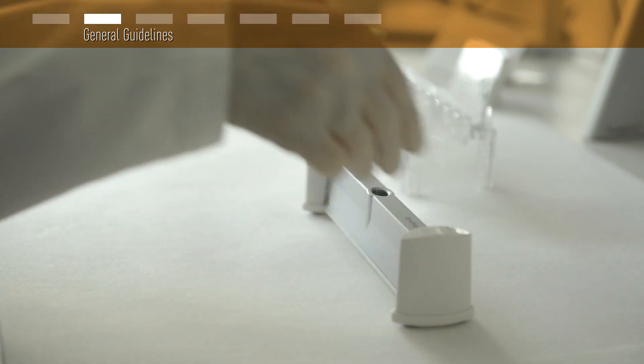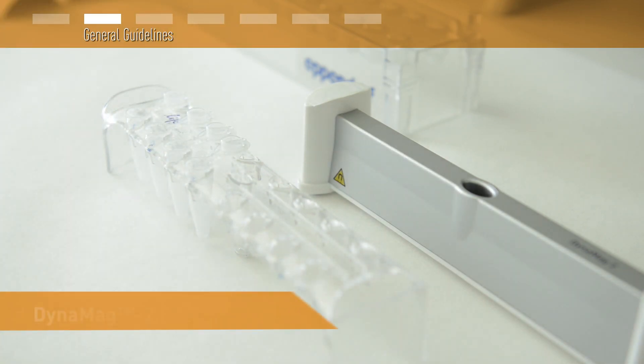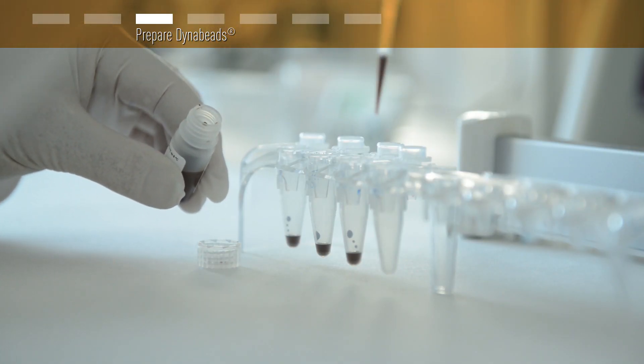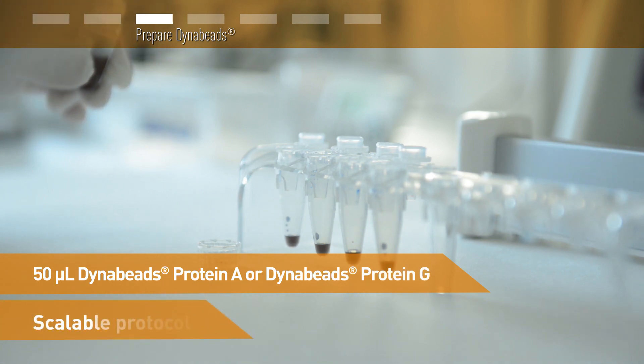No columns or centrifuge is required. The transparent top rack of the DynaMag 2 can also be used as a sample rack. Make sure the DynaBeads are fully re-suspended. For a standard isolation, you'll need 50 microliters, but you can easily scale the protocol to match your experimental setup.